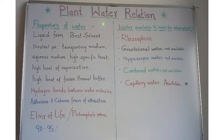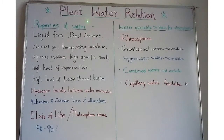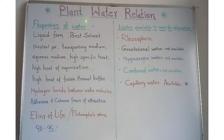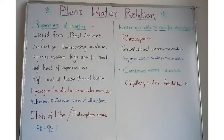Water is the most important factor for all vital activities of plants. The word vital means important or necessary. Plants obtain a variety of substances like water, minerals, nutrients, food, and gases from their surroundings. Now let's see some properties of water.